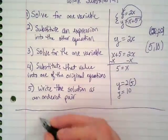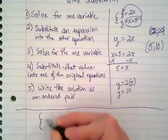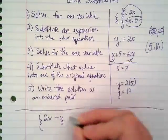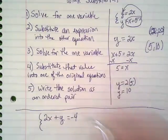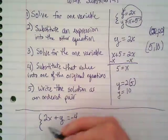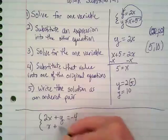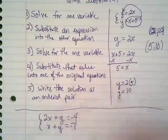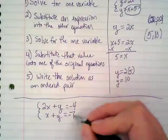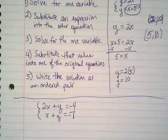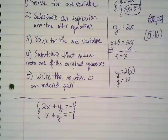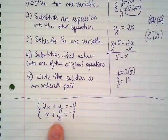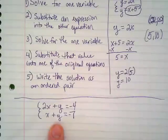Let's write a system that is not, and we're going to have to do some converting. This one is 2x plus y equals negative 4. And then x plus y equals negative 7.